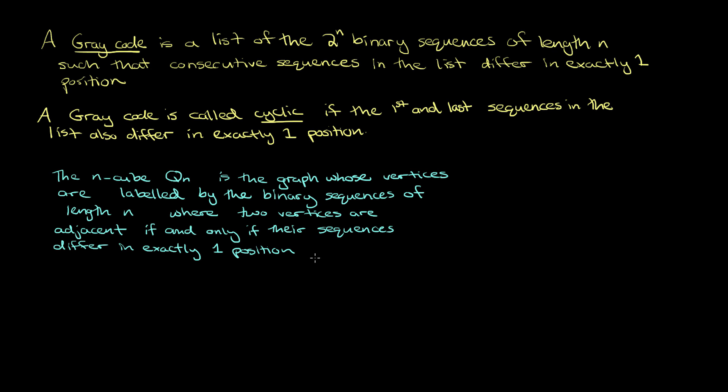So to get a good feeling for this, let's take a look at a few examples. First let's take q1. So there are only two sequences of length one, zero and one, and we adjoin them because they are different in exactly that position.